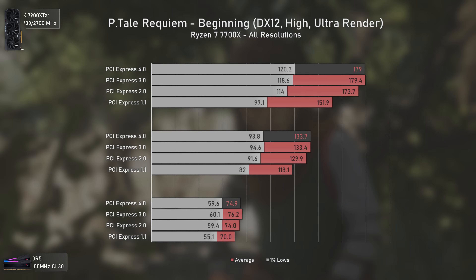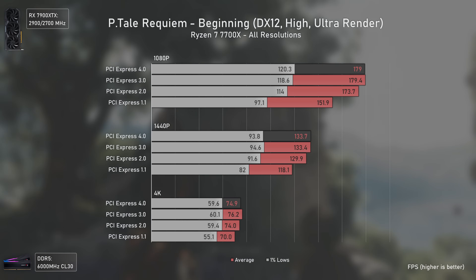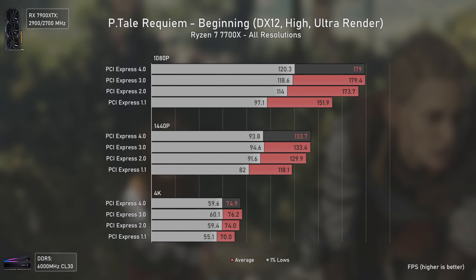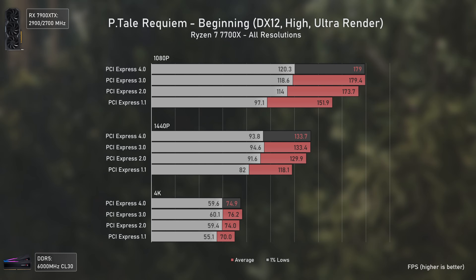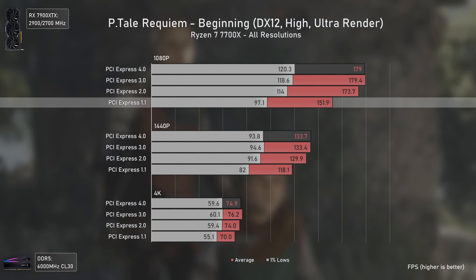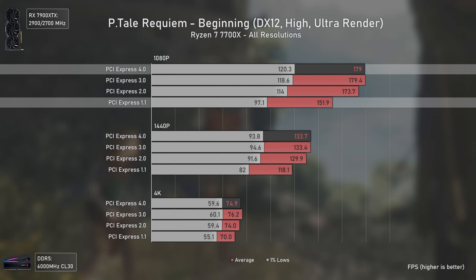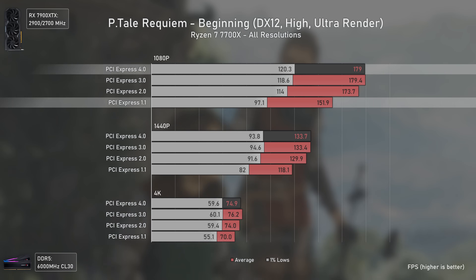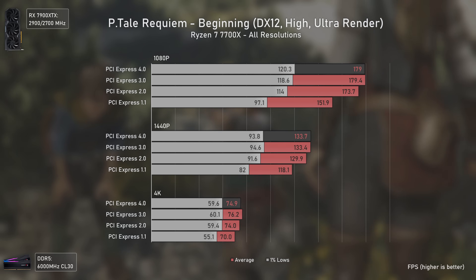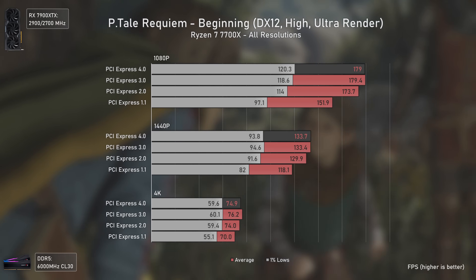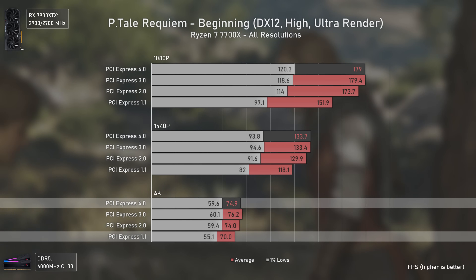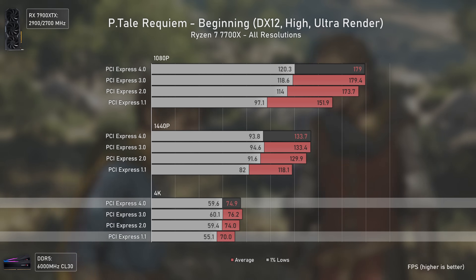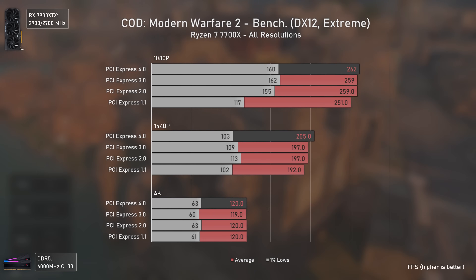Starting with A Plague Tale: Requiem — a pretty well-optimized title — we can see that even PCIe 1.1 does its job quite well considering this standard was introduced in 2005, delivering 151.9 average fps, which is 85% of PCIe 4 performance. As resolution goes up and the GPU handles more of the load, the difference between versions shrinks, with PCIe 1.1 being just 4 fps behind PCIe 4 at 4K.